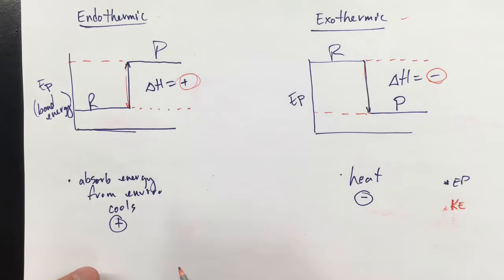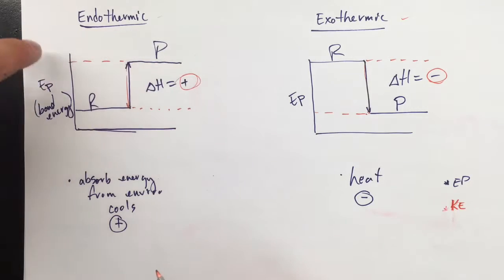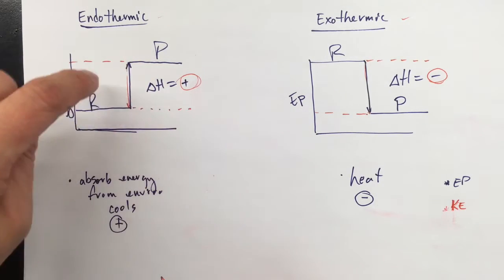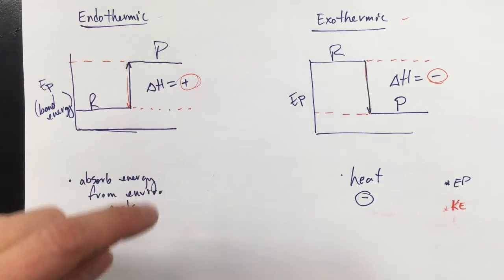So the bond energy, if it's going up, then the environment's kinetic energy, or heat energy, thermal energy, is going down.